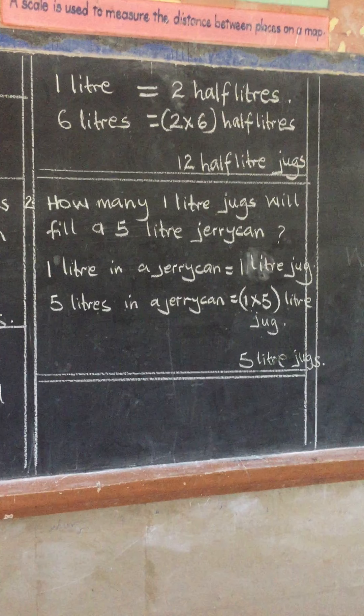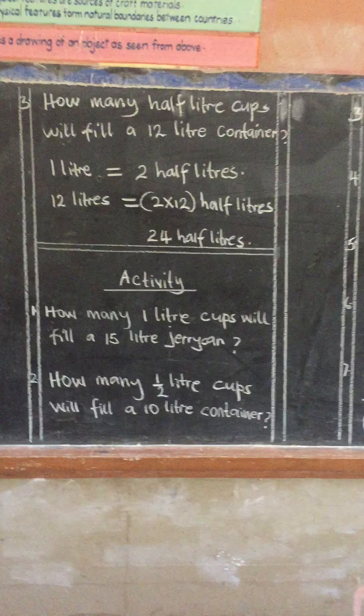Example number three: how many half-liter cups will fill a 12-liter container? Here we say that in one liter there are two half liters. So 12 liters will equal 2 times 12 half liters. Since 12 times 2 is the same as 12 plus 12, which is 24, our answer will be 24 half liters.